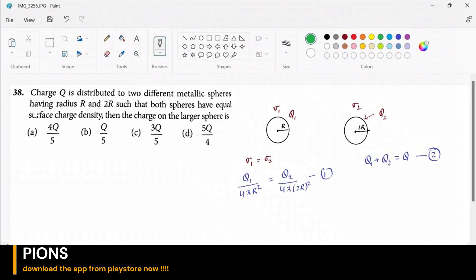Let's see. So 4 pi cancels with 4 pi and q1 upon r square will be equals to q2 upon 4 r square.